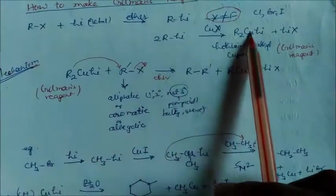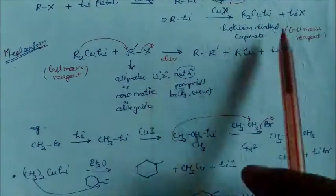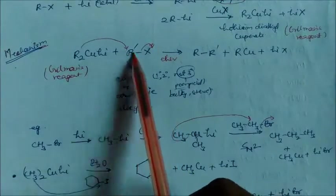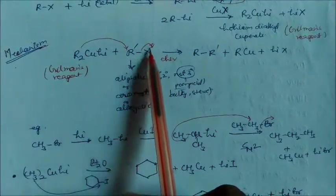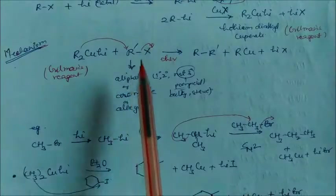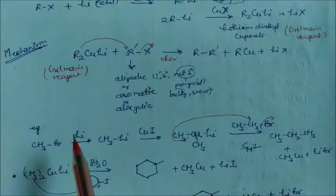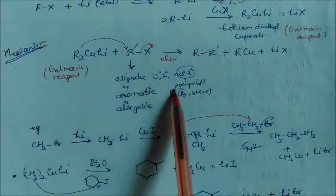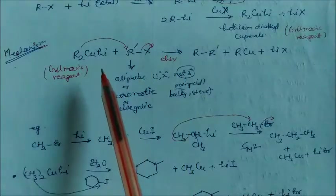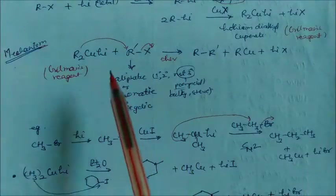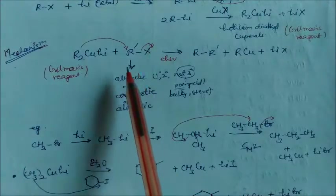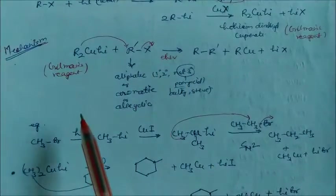This R₂CuLi is the only useful reagent in Corey-House synthesis. It then reacts with the alkyl halide R'X. One important feature: the R' group attached to the halide should be aliphatic, aromatic, or alicyclic. In the aliphatic case it should be primary or secondary, but not tertiary, because a tertiary carbon is very bulky and the SN2 reaction may not be possible — it will be difficult for the Gilman's reagent to attack due to the bulky group and the bond will not be broken.